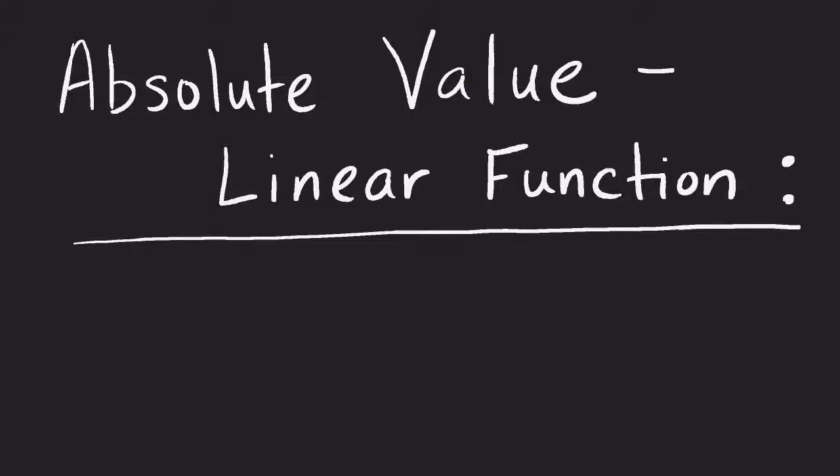Absolute Value Linear Function. So what we're looking at now is a linear function that involves an absolute value. Now for a linear function dealing with an absolute value, what it really looks like is we've basically got our y equals, and you could have mx plus b, you could have all kinds of different versions. I'm going to look at a straightforward one for right now, just the absolute value of x minus 2.